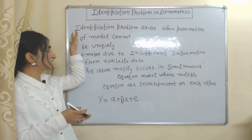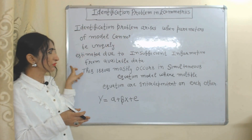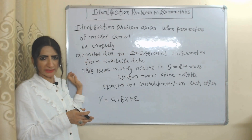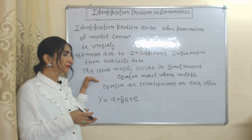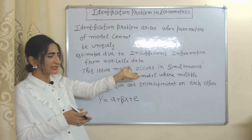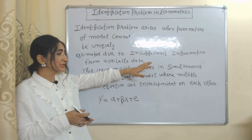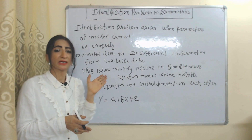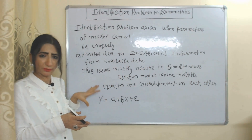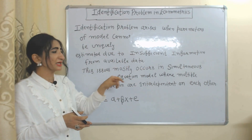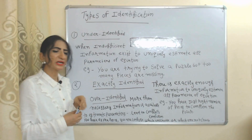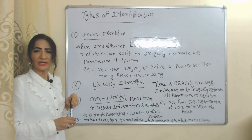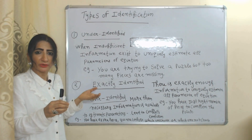When that information is not available, the identification problem arises. So the identification problem arises when parameters of a model cannot be uniquely estimated due to insufficient information from available data. This problem mainly occurs in the case of a simultaneous equation model, because in that case multiple equations are interdependent on each other.